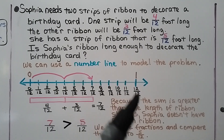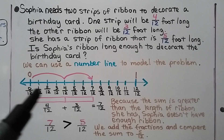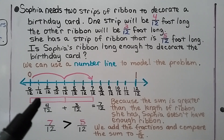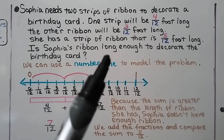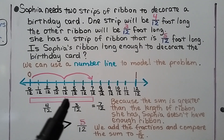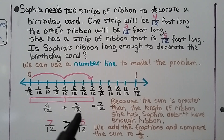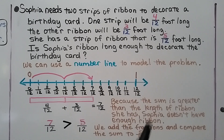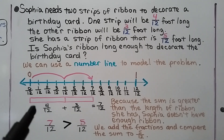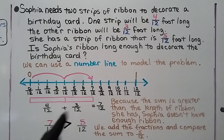She needs a strip that is four-twelfths, then another that is three-twelfths. Four-twelfths plus three-twelfths equals seven-twelfths. Since seven-twelfths is greater than the five-twelfths she has, Sophia doesn't have enough ribbon. We add the fractions and compare the sum: seven-twelfths is greater than five-twelfths.